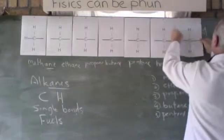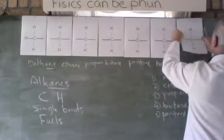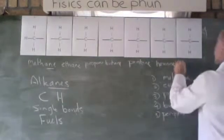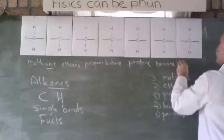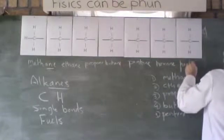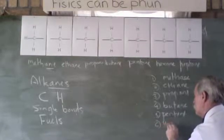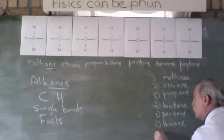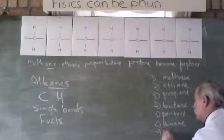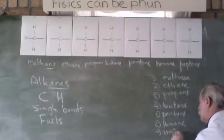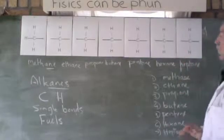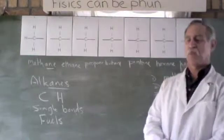If we've got a seventh one, it is heptane. So five, six would be hexane. Seven would be heptane. So these are all liquids like petrol.